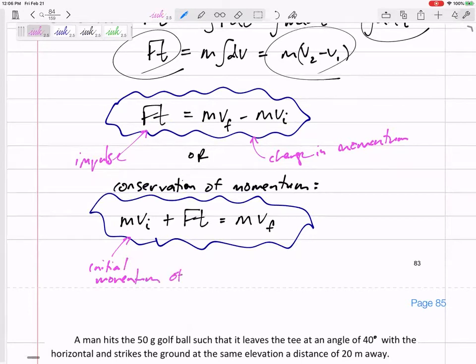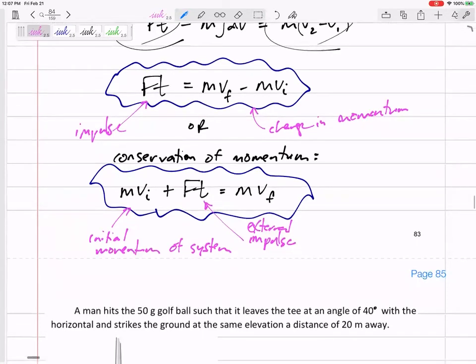Sometimes we could be looking at one object, sometimes we might be looking at two objects that both have mass. The external impulse - if we have something being applied to our object from some outside force - equals the final momentum of the system.